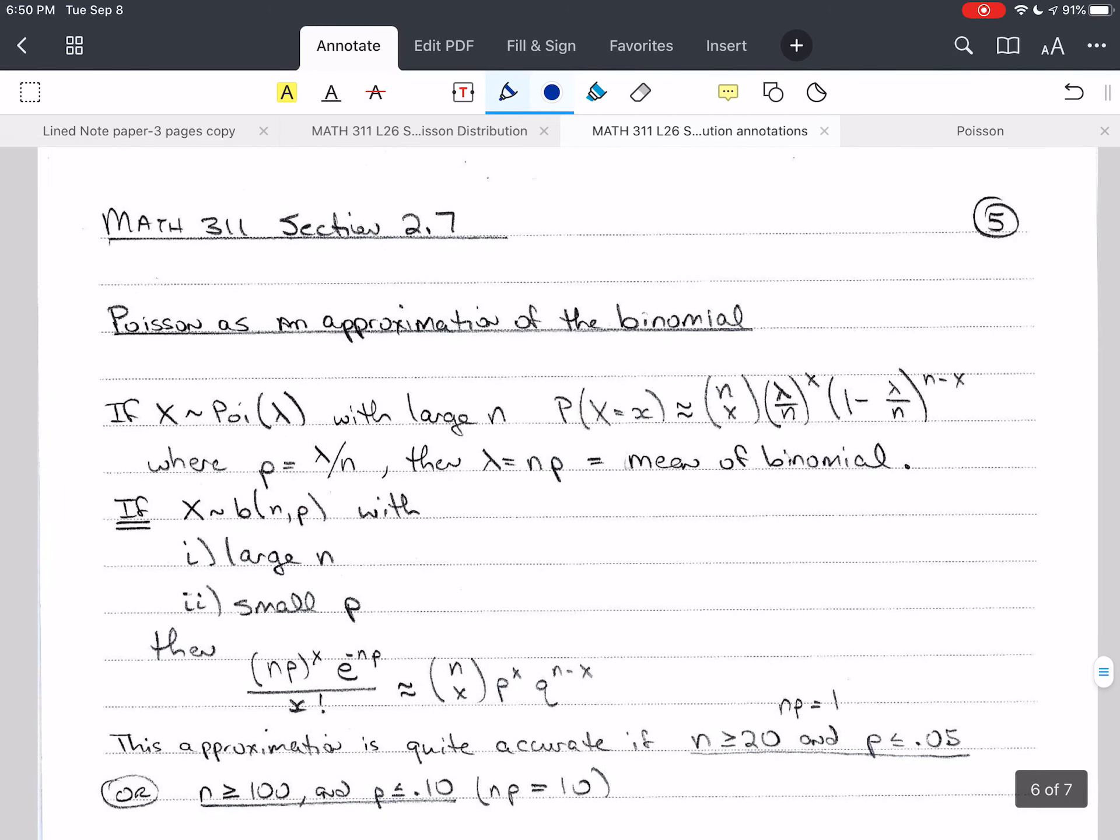Now, the Poisson can be used as approximation for the binomial. So if X is distributed as a Poisson variable with lambda as its parameter, and if we have a large N, then we see that the probability that X is equal to X is approximately a binomial, where we've replaced P with lambda over N. And then you'll see that lambda is equal to N times P, and that's the mean of the binomial. And remember that the mean of the binomial, mu, was N times P, and lambda is the mean of the Poisson.